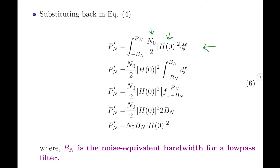Performing the integration: ∫_{-Bn}^{+Bn} df = f evaluated from −Bn to +Bn = 2Bn. The factor of 2 from the integration and the 2 in the denominator of N0/2 cancel. Therefore, the noise power at the output of the ideal filter is Pn' = N0 · Bn · |H(0)|². Please note, Bn is the noise equivalent bandwidth for the low pass filter.